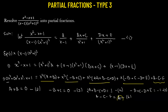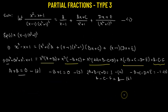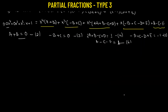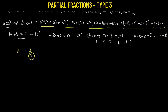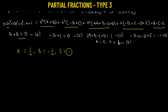We now have five unknowns and five equations (equations 2 through 6). Solving these — which is left as an exercise — gives: a equals 1/4, b equals negative 1/4, c equals negative 1/4, d equals 1/2, and e equals negative 1/2.